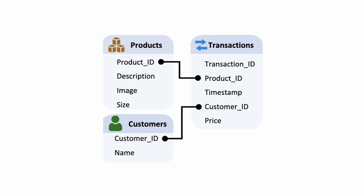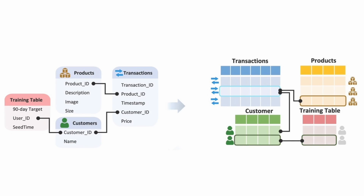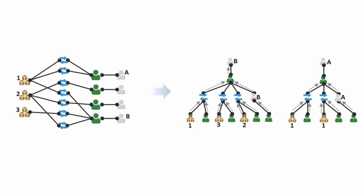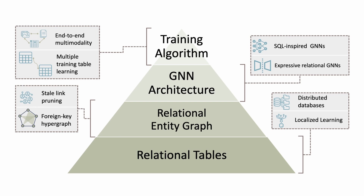Consider an e-commerce company with three databases: products, transactions, and customers. The company is interested in predicting how much customers with given characteristics will purchase over the next 90 days. Traditionally, this would require joining multiple tables into one aggregated dataset. With relational deep learning, the database schema is directly converted into a heterogeneous graph representation, with node types for products, transactions, and customers, and edges linking related entries across tables. A GNN is then trained on this graph end-to-end, exploiting all available information in the databases relevant to the task. Given the ubiquity of relational databases, this technology has immense potential across countless industries.